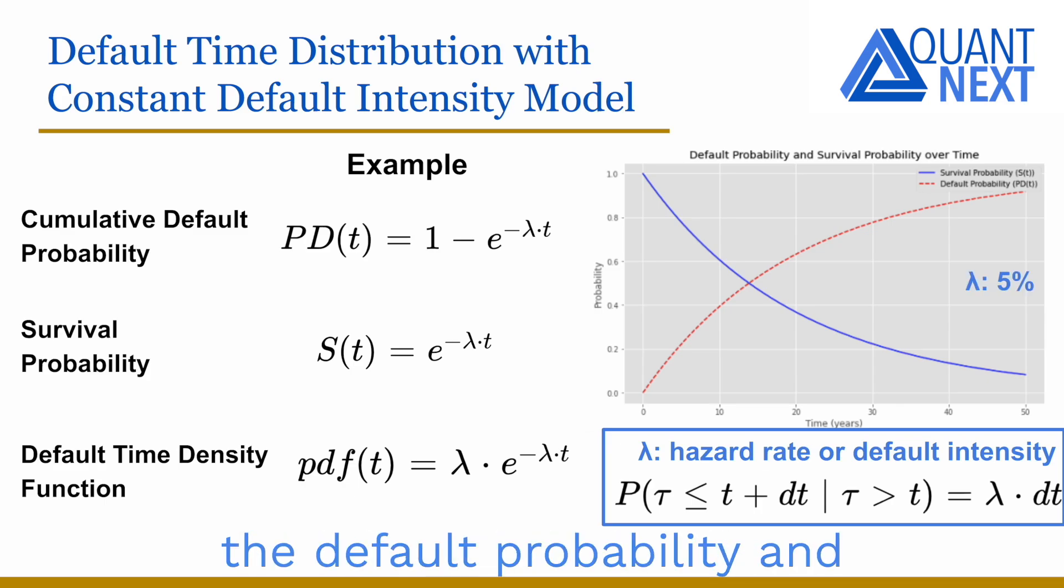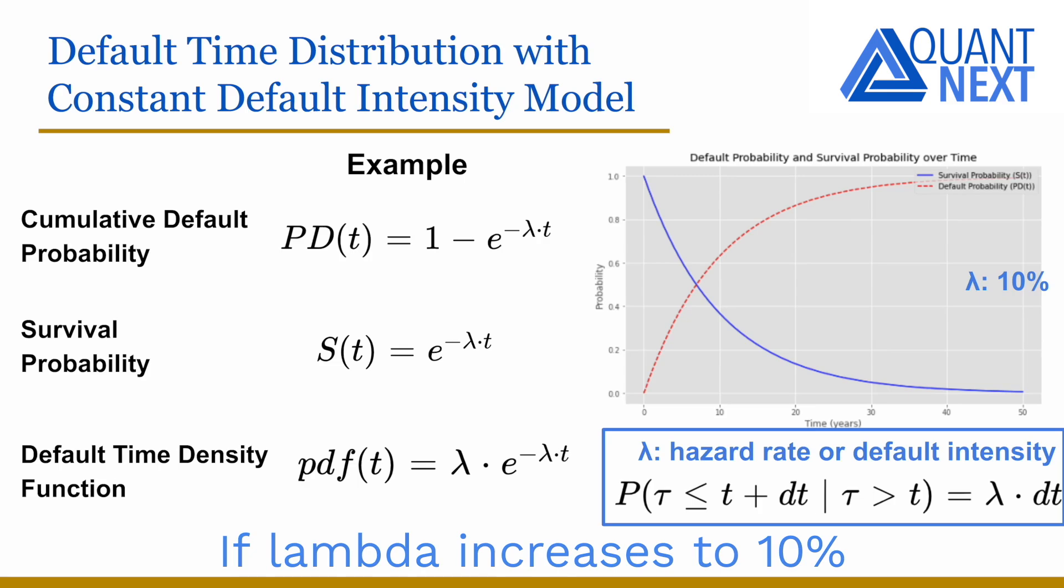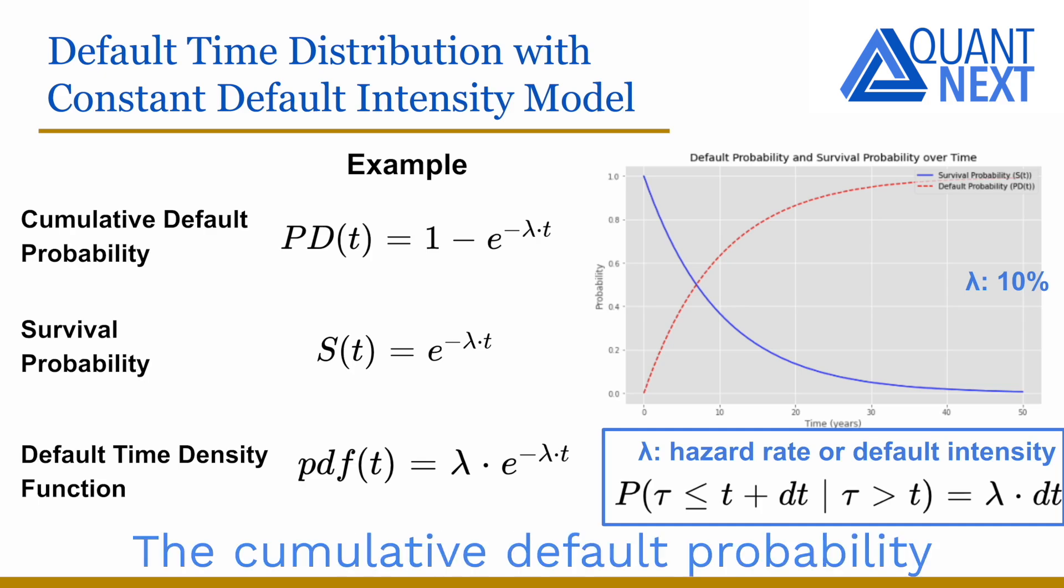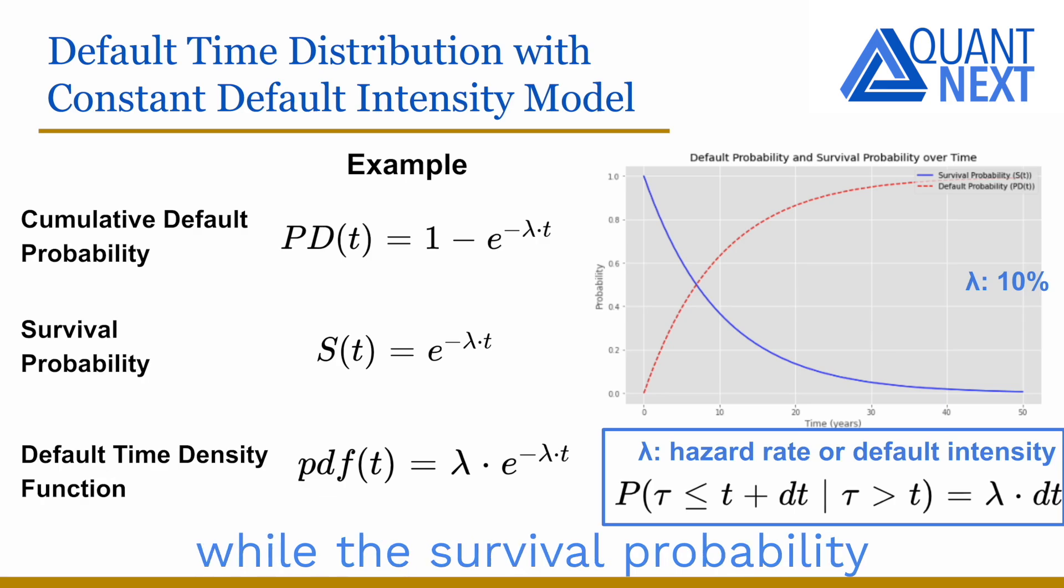On this chart, we show the default probability and the survival probability as a function of time, with lambda equals to 5%. If lambda increases, to 10%, for example, it means a higher risk of default for the borrower. The cumulative default probability function increases, converging to 1 more quickly while the survival probability decreases.